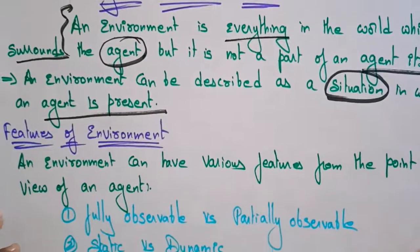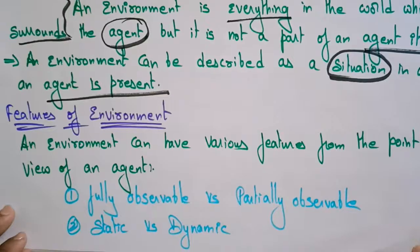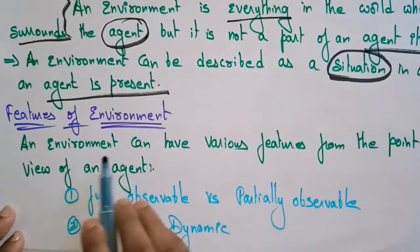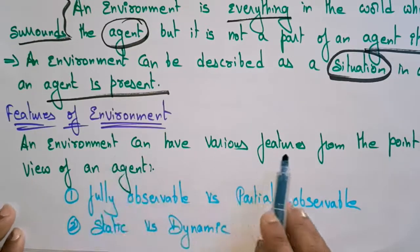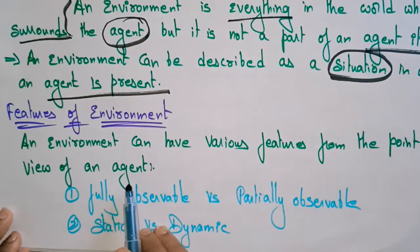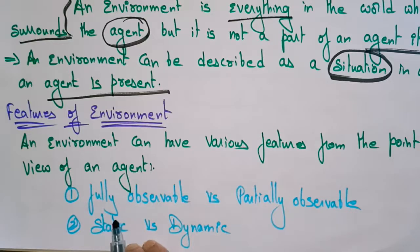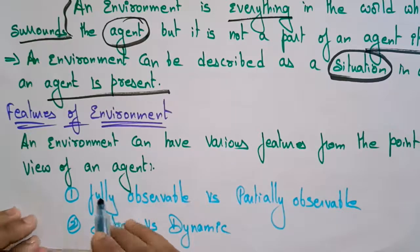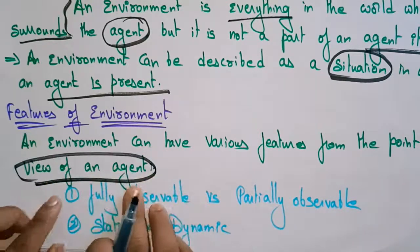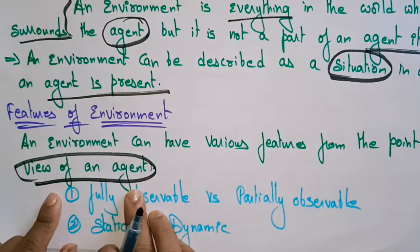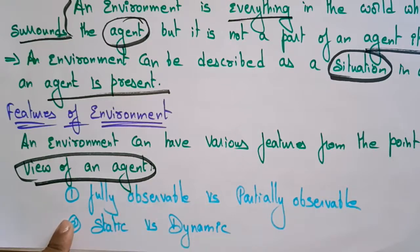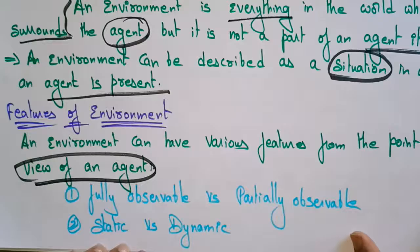Now let's see what are the features of environment. An environment can have various features from the point of view of an agent. So here we are talking about the features of environment in the view of the agent — remember this point. In the view of the agent, an environment has various features.